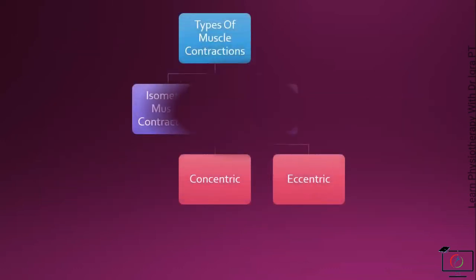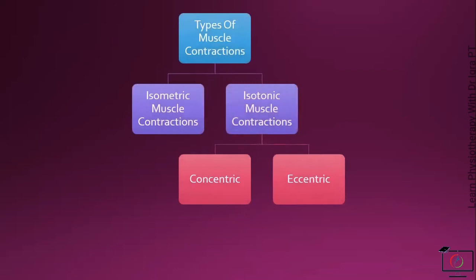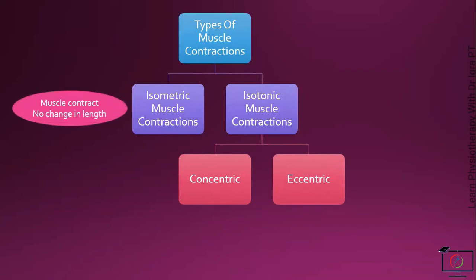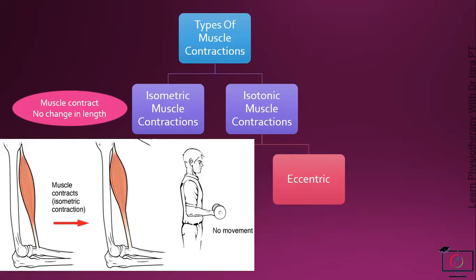There are two types of muscle contraction: isometric muscle contractions and isotonic muscle contraction. In isometric muscle contractions, the muscles contract but there is no change in the length. As you can see in this diagram, a person is neither flexing nor extending, but just increasing the intramuscular tension of the bicep muscle. Hence there is no movement.